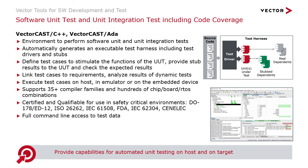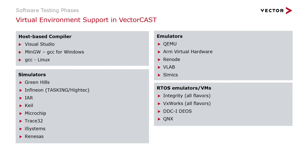VectorCast has QualDocs for DO-178C and tool qualification for ISO 26262, IEC 61508, and IEC 62304. VectorCast supports most simulators and emulators out of the box. It supports the three most popular host-based compilers — Visual Studio, GCC for Windows, and GCC for Linux — as well as all the most popular simulators and emulators. For RTOS emulators, VMs, and live on-target boards, supported RTOSs include Integrity, VxWorks, DDC-I DEOS, and QNX.